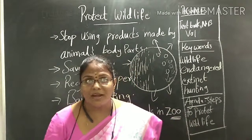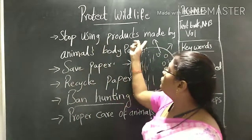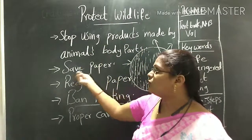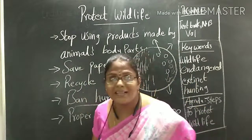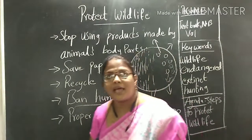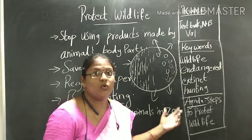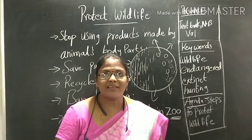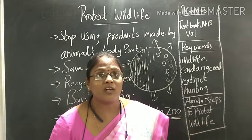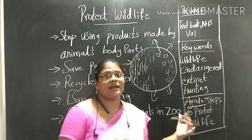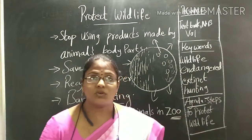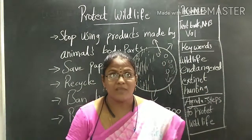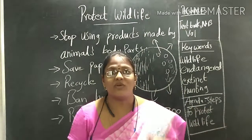So to summarize how we want to protect wildlife: we should stop using products made from animal bodies, we should save and recycle paper, we should ban hunting, and we should take care of endangered animals by keeping them in the zoo. Examples include lions, tigers, and rhinoceroses. The zoo park is the house of the animals — we are the guests and should not harm them.